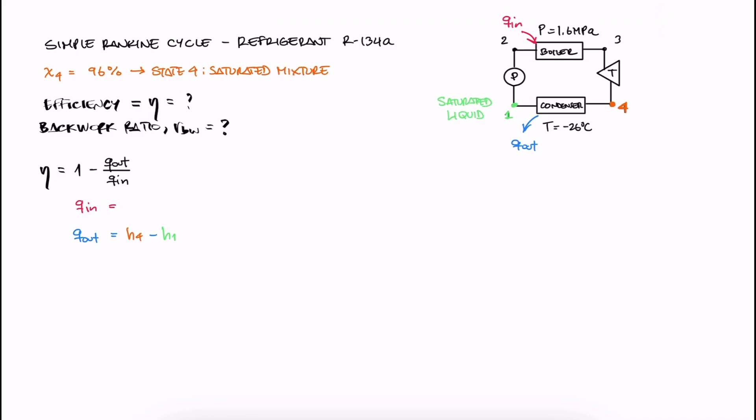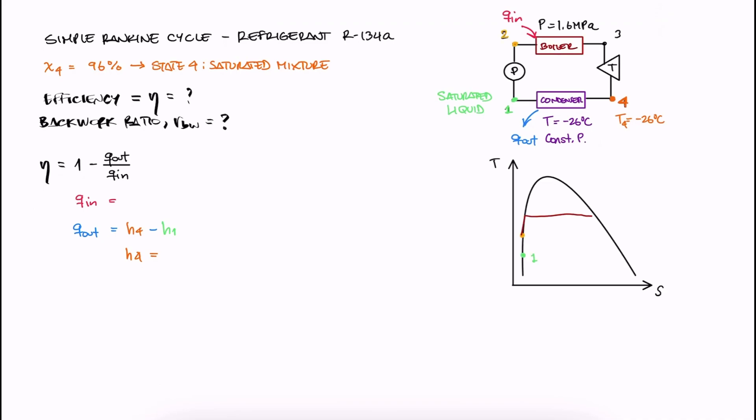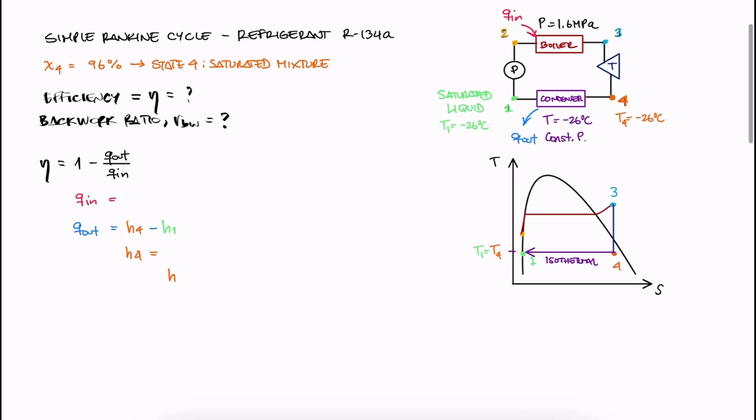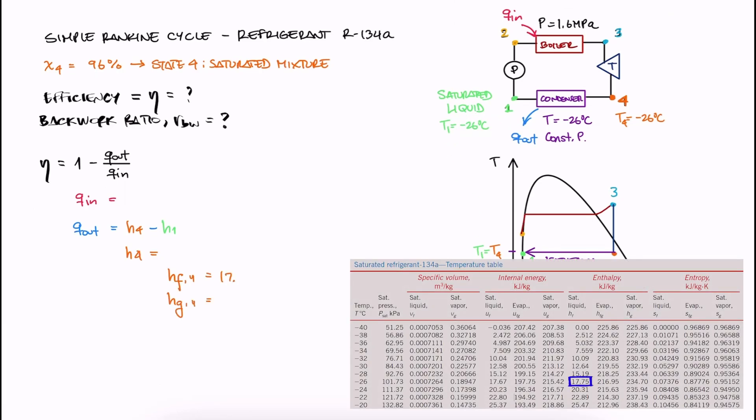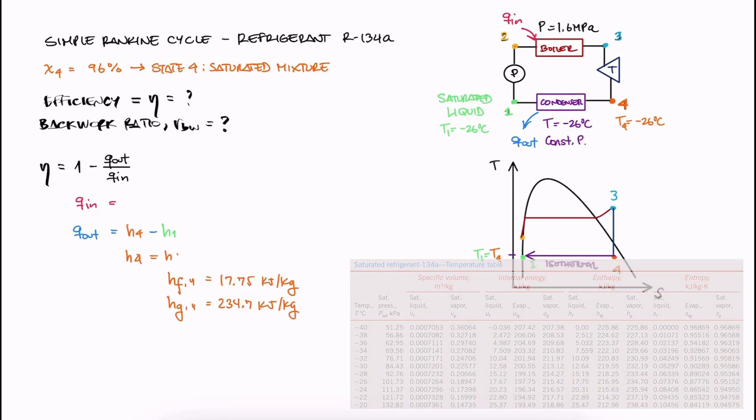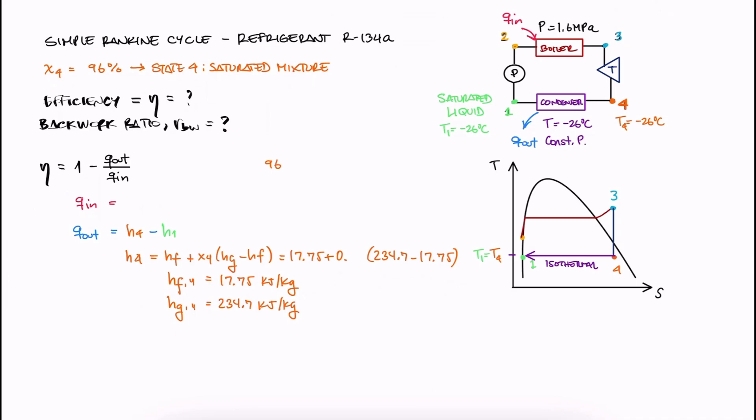For H4, we have the quality and the temperature. Remember that the heat rejection process at the condenser is at constant pressure, and since we have a saturated mixture, it is therefore isothermal, meaning that T4 and T1 are the temperature of the condenser. Therefore, if we find the saturated liquid and saturated vapor values for H at the given temperature, we can use those and the quality to calculate H4.